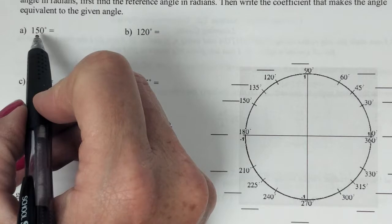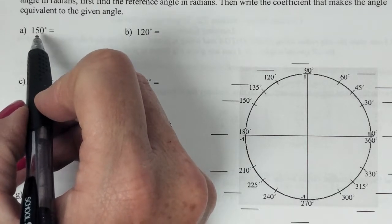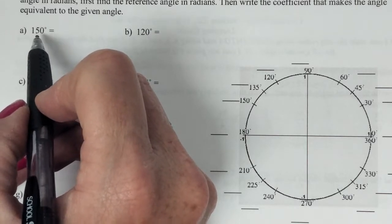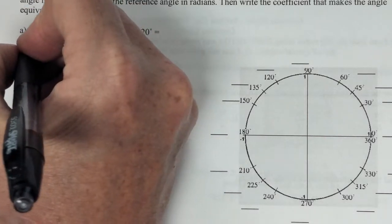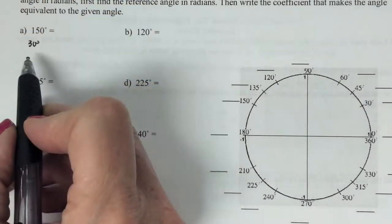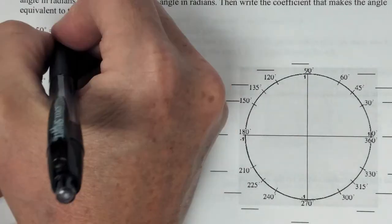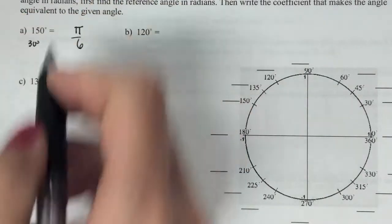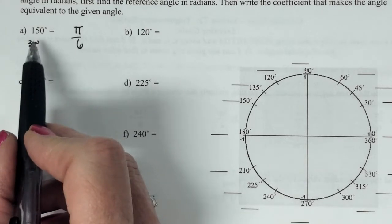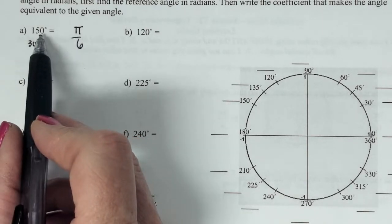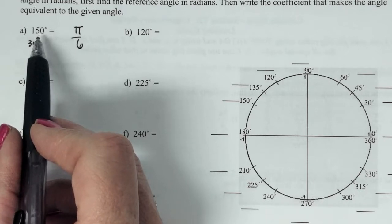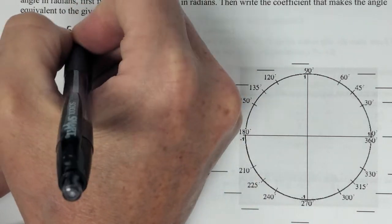First of all, think of the reference angle. How far away is it from 180? How far away is 150 from 180? 30. So I'm going to jot that down, 30. What's another name for 30? Pi over 6. So I know this is going to have to be 30 times something, because the reference angle is always going to be within the angle. So 30 times what is 150? 5. So 5 pi over 6.